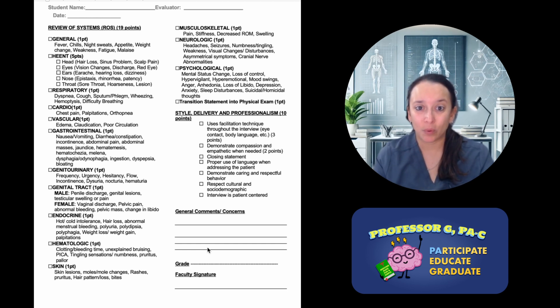For our practical examination, we do have to ask review of systems. Remember, there are 19 points. You're going to get one point per system, and within each system you're going to have to ask at least two symptoms. In the past for general, we've asked that you ask all of the general. I'm going to ask every single patient whether they have any fever, chills, night sweats, appetite change, weight change, weakness, fatigue, malaise. We had to ask all of them before.